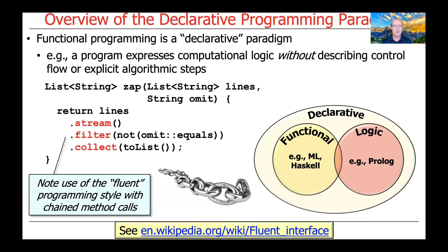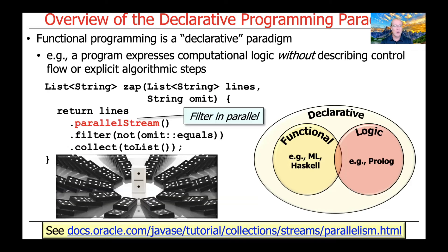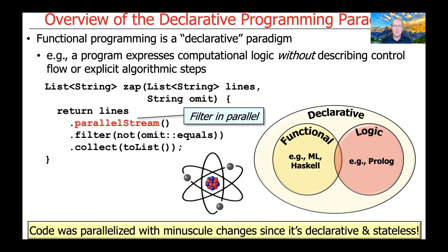A couple of things to note. First, notice the use of fluent programming, or fluent interfaces, where we chain method calls together. We say lines.stream(), which converts the list into a stream of strings, then connect it with filter() to remove things matching omit, and finally use collect() to collect results into a list. Notice also how easy it is to convert from a sequential model to a parallel model by simply changing the factory method from .stream() to .parallelStream(), which does all the filtering in parallel in a pool of threads — with absolutely minuscule effect to the code.